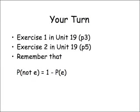So I think you'd better do some practice. Exercise 1, unit 19, page 3. Exercise 2, unit 19, page 5. And remember that the probability of something not happening is 1 minus the probability that it happens — that can come in quite handy. You might want to pause the screencast now and wait until you've done the exercises before looking at the next bit.